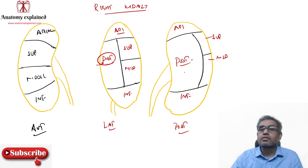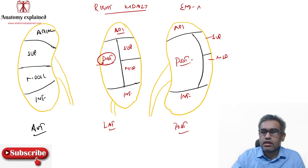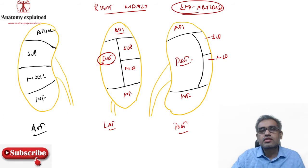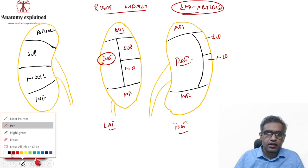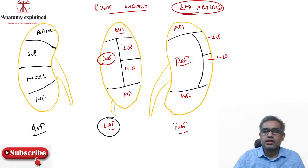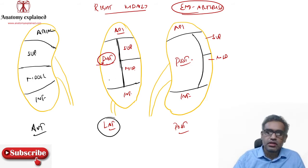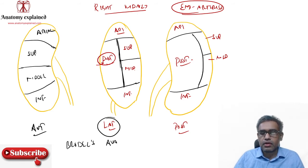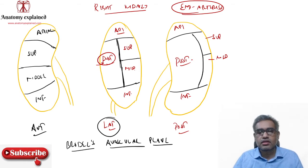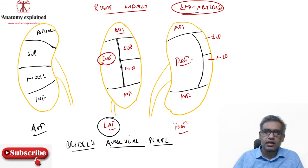An important point: these segmental arteries are end arteries — frequently asked in exams. On the lateral view, there is a longitudinal separation between the anterior and posterior division territories. This was described by Brodel as the Brodel's avascular plane, by which you could enter the kidney for a partial nephrectomy. However, it is not practically followed nowadays as there are various vessels present there — it is noted only for historical purposes.